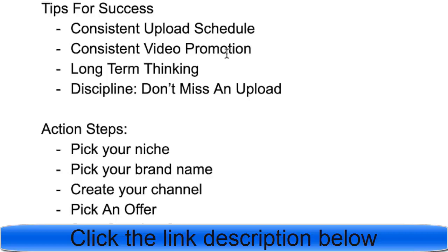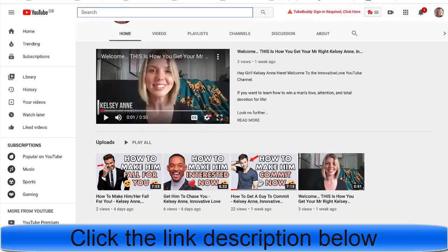Consistently promote as well — create a plan of action. For example: reach out to 10 to 50 blogs per day, build a following on other social platforms to drive traffic, or spend a set amount on advertising daily to build an email list and send that traffic to your YouTube channel. Have a systemized promotion plan.